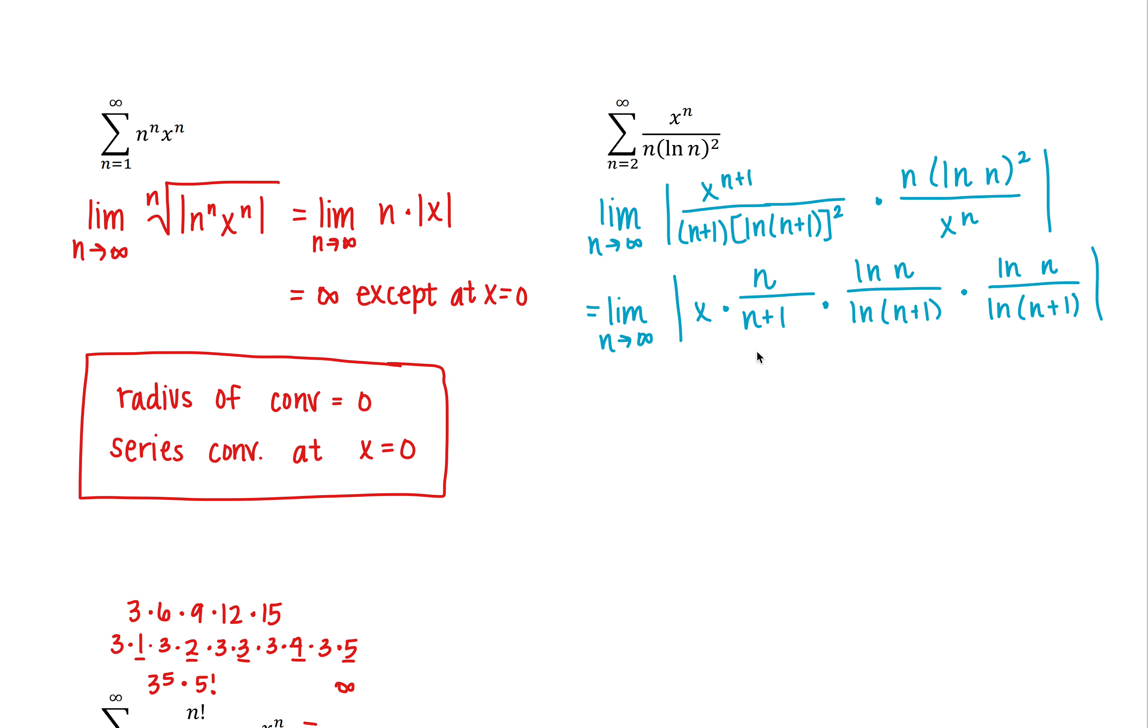So finding the limit as n goes to infinity for the first fraction here you could divide everything through by n and you'd end up with 1 over 1 plus 1 over n so you'd have a limit of 1. But for these two you would have to use L'Hôpital's rule which is taking the derivative of the numerator and denominator. So I'm going to go ahead and do that real quick.